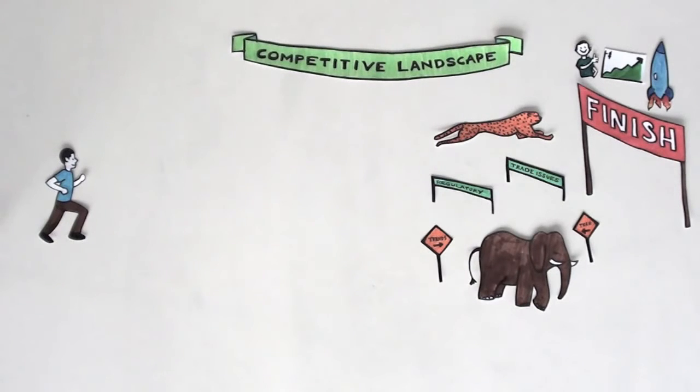Can you imagine trying to run a race with a blindfold on? The chances of getting to the finish line first, or even at all, are pretty slim. That is where competitive intelligence comes in.